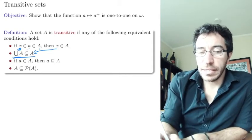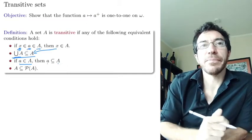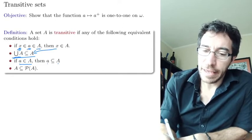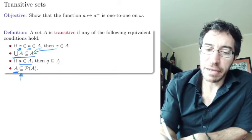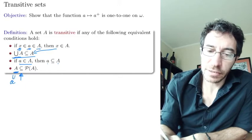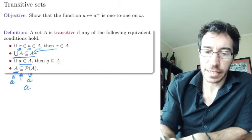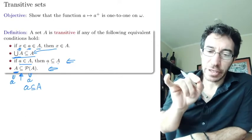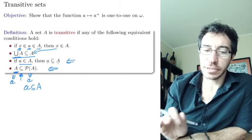Another equivalent formulation: if lowercase a belongs to capital A, then everything in a is also in capital A — the same idea. And yet another: every element of A is a subset of A, which is a belonging to the power set. These are all equivalent definitions. If that was too fast, pause the video and try to prove each of these equivalences one at a time — it's a good exercise.